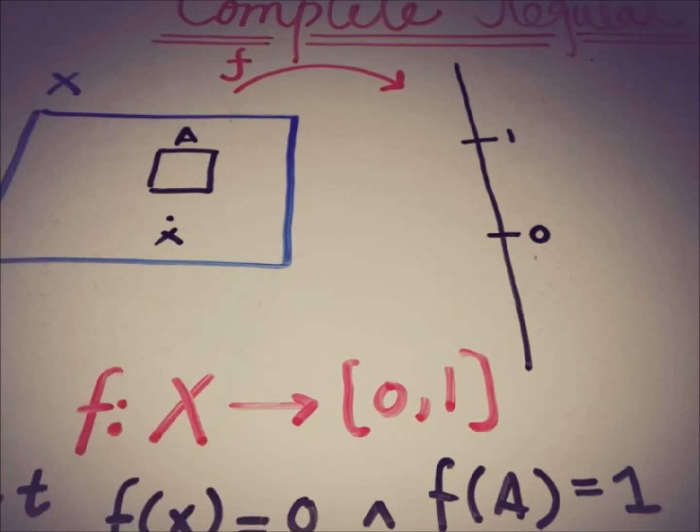Mapping A to 1 means that if we take any element from the closed set, then this function maps any element of this closed set to 1 and any element that was not from this closed set to 0.